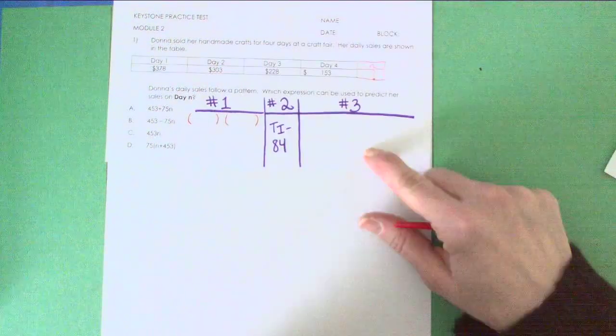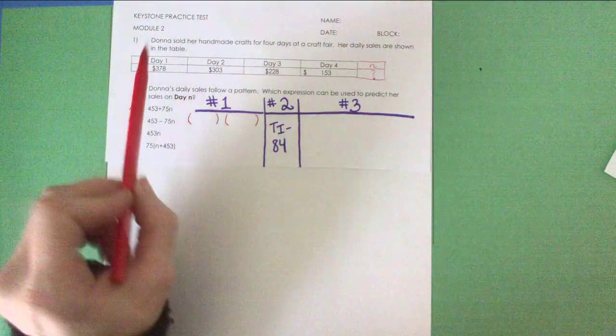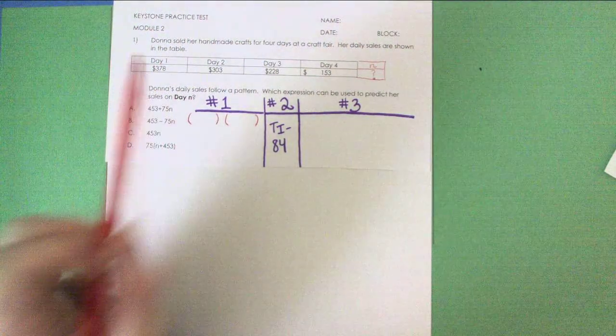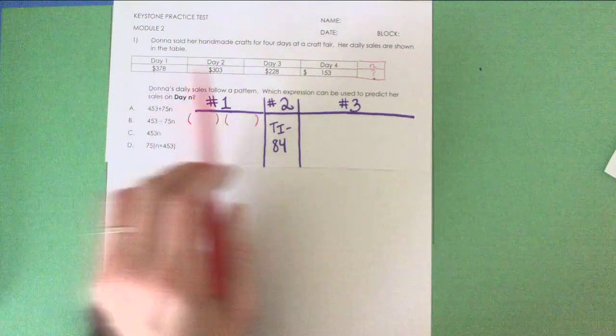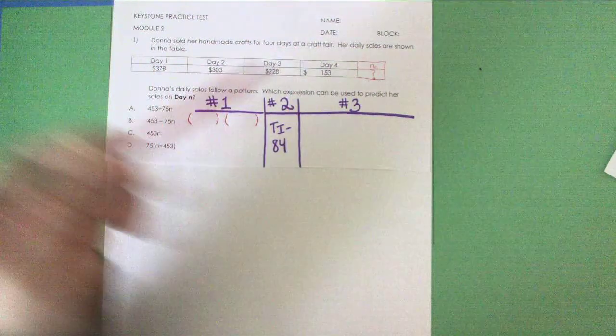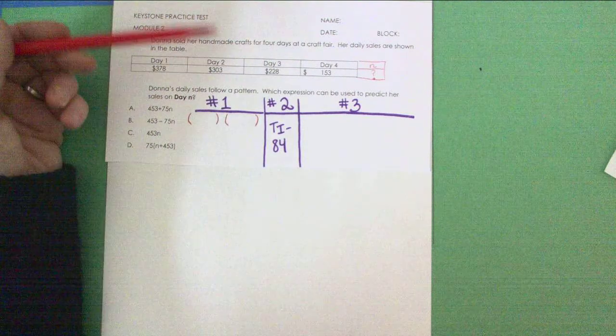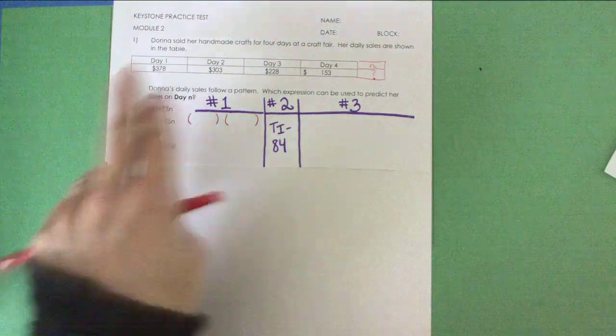We want to write an equation to model this data. Now this table is interesting because it's moving left to right, it's a horizontal table, and we're used to our tables being vertical.